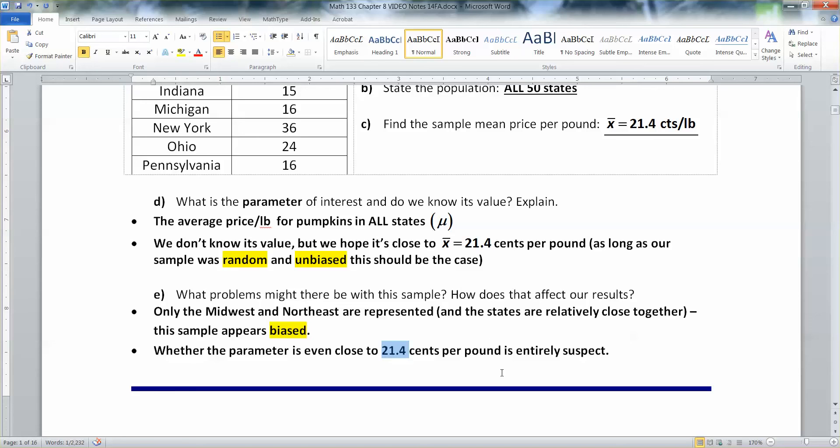We would probably toss them out and say, this is probably not a good estimator of the parameter. The parameter is probably not close to 21.4 cents per pound. Because the sample was biased, the parameter is probably not close to 21.4 cents per pound. Once you have a biased sample, basically, you've got to check the numbers. They're no good to you once your sample is biased.